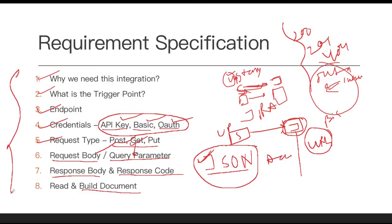These are the requirement specifications needed when connecting from one instance to another. If you go for an interview, they may ask what steps are required to integrate one instance to another — for ServiceNow, Jira, Slack, Zoom, and so on. You need to first gather all this information — endpoint, credentials, trigger point, request type — before you start coding or the technical implementation. Without this, you will not be able to complete the integration.